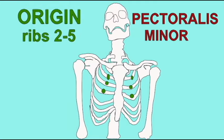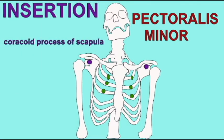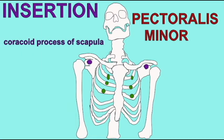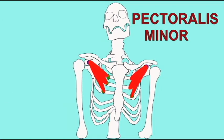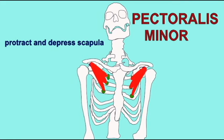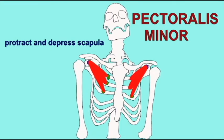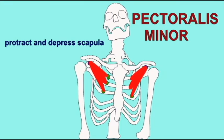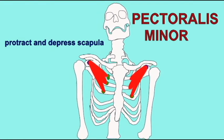The pectoralis minor muscle has its origin on three ribs, typically three to five. It inserts onto the coracoid process of the scapula. And when it contracts, it protracts the scapula, pulling it forward, and depresses the scapula, pulling it downwards.